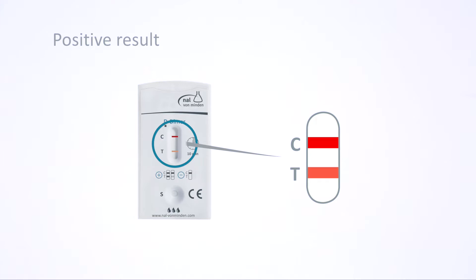The color intensity in the test line region may vary depending on the concentration of the analyte present in the sample. For this reason, any shade of color in the test line region should be considered positive. Note that this is a qualitative test only and it cannot determine the analyte concentration in the sample.